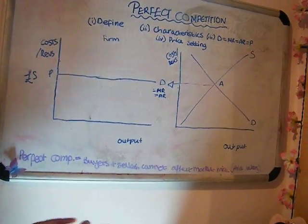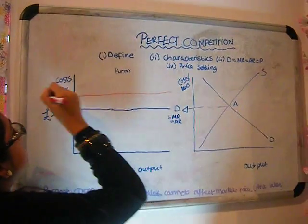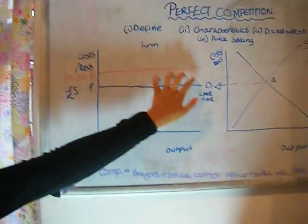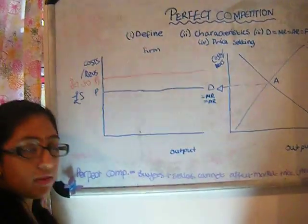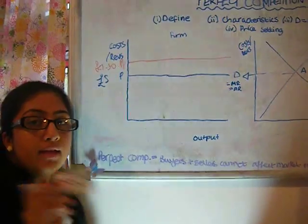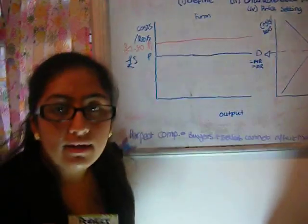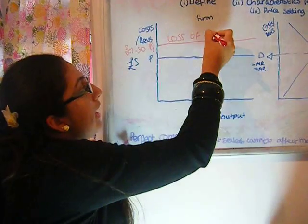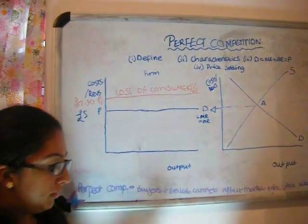Now if a firm decided to sell at P1 and this price was £7.50, they will be in trouble. And the reason being because in a perfect market, consumers have perfect knowledge. This means they are aware that there is another firm down the road selling it for £5. So there will be a loss of consumers or demand. And if there are no consumers or demand, they will start making losses. And basically they will lose out.